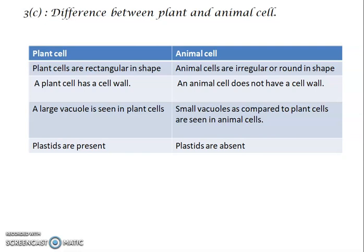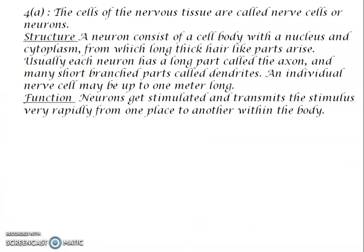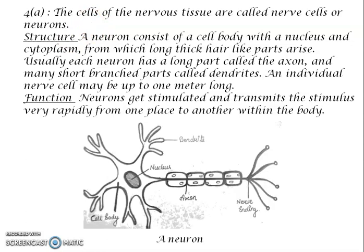Question 4 contains long answer questions, each carrying four marks. Question 4a: what is a neuron? Write the structure and function of a neuron. The cells of nervous tissue are called nerve cells or neurons. You should provide a diagram to support your answer.